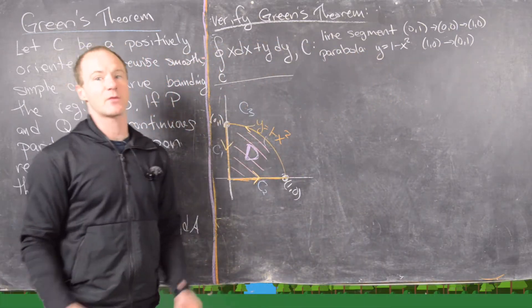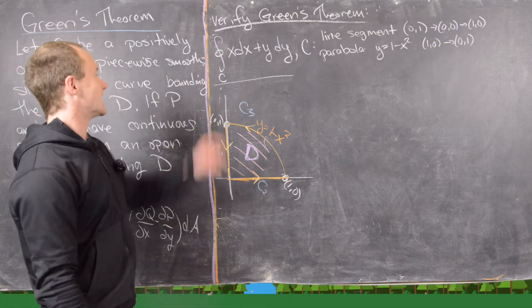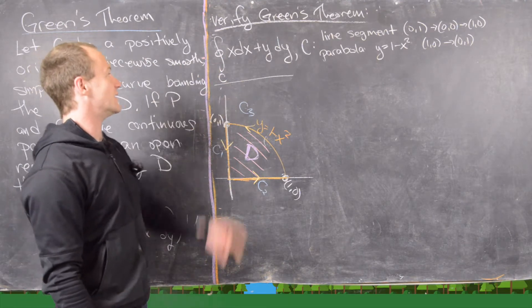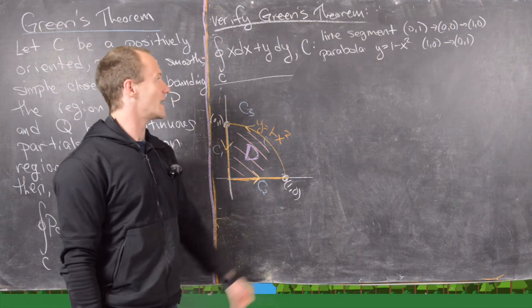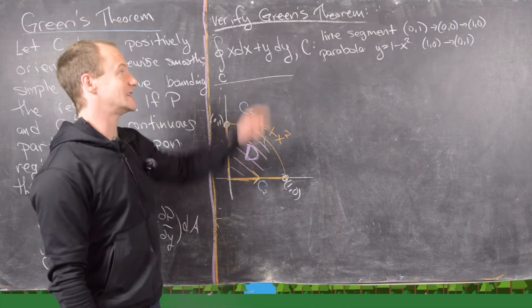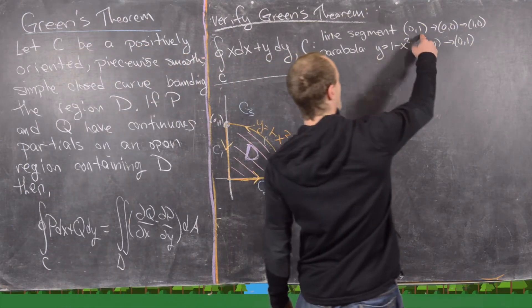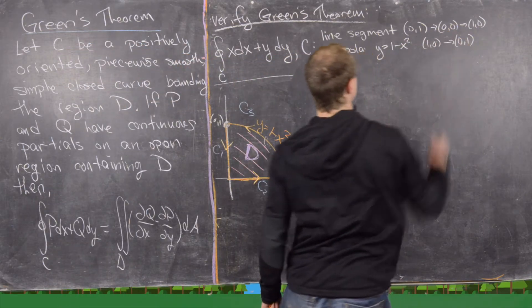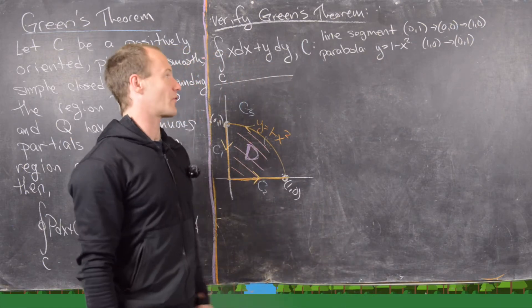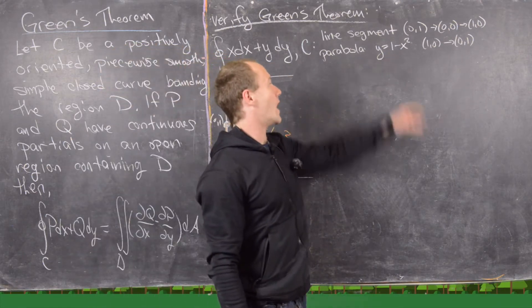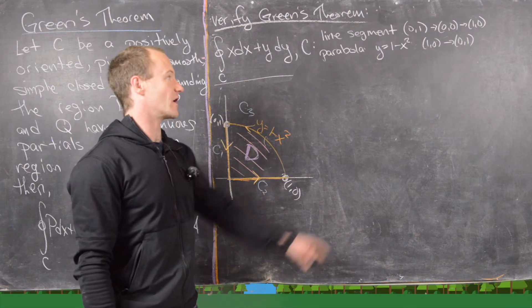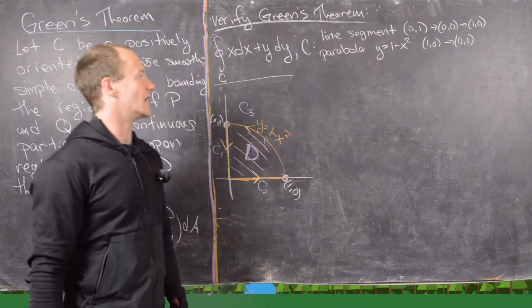Okay, so the example that we're going to use to verify this is this line integral over C of X dx plus Y dy, where C is the line segment from (0,1) to (0,0) to (1,0), and then the parabola Y equals 1 minus X squared from (1,0) to (0,1).